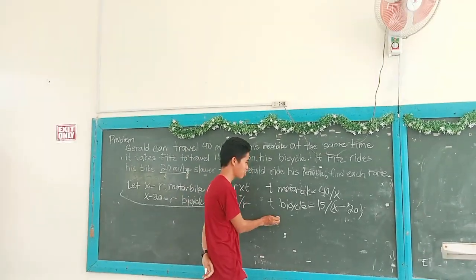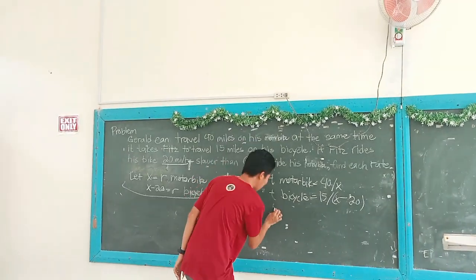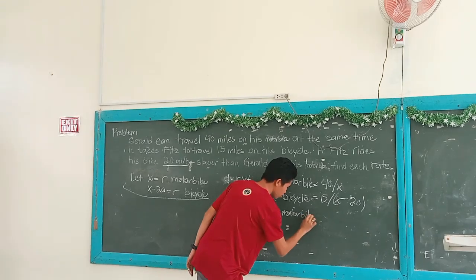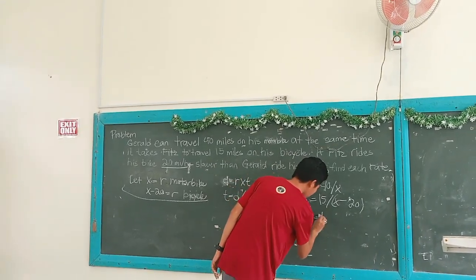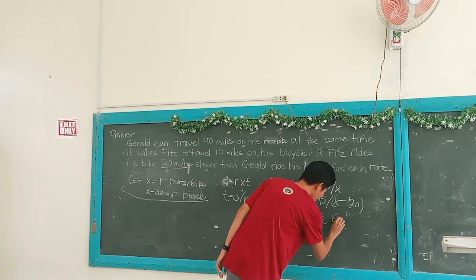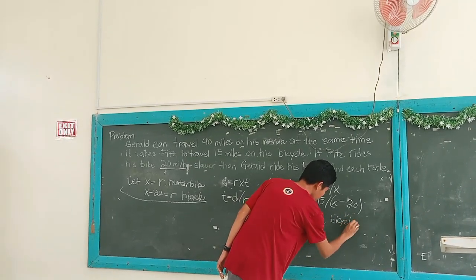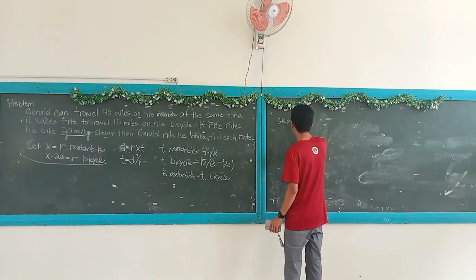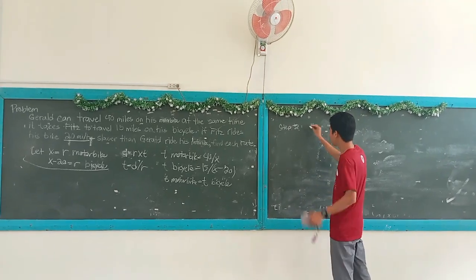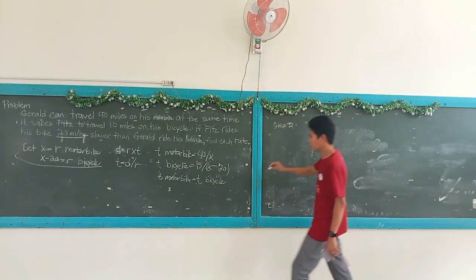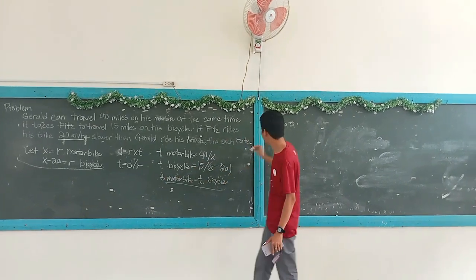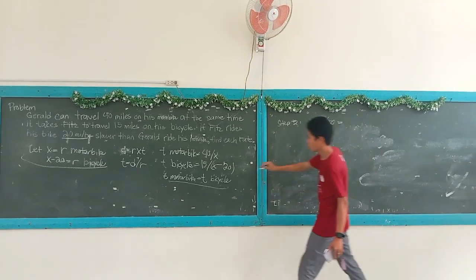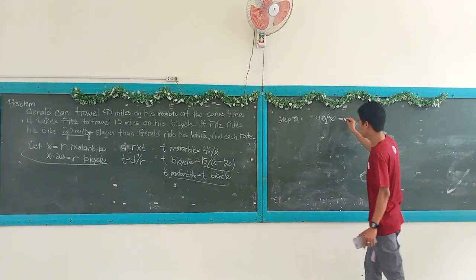Since the time of the motorbike is equal to the time of the bicycle, we need to decide the mathematical equation to be used. Since motorbike time equals bicycle time, we set up: 40 over x is equal to 15 over x minus 20.